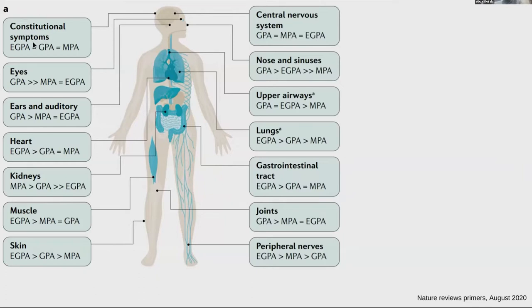This classification is very fluid and different diseases have different predilection for organ systems. A lot of upper respiratory tract, nose, and sinus involvement is much more likely with GPA. GPA is more likely to cause lung nodules, cavitations, and granulomas. EGPA is much more likely to cause granulomas, asthma, and eosinophilia.